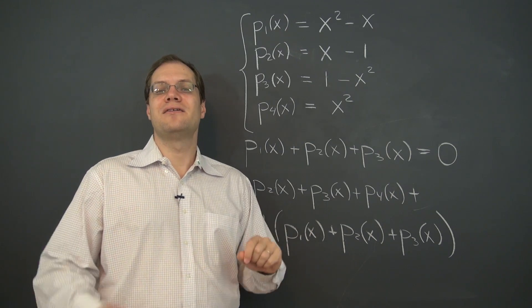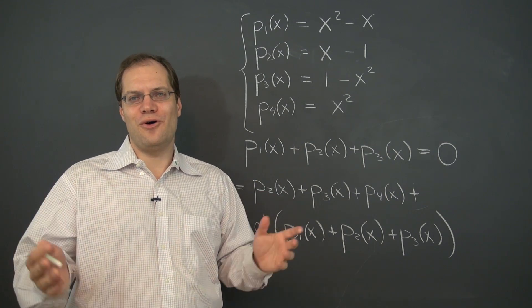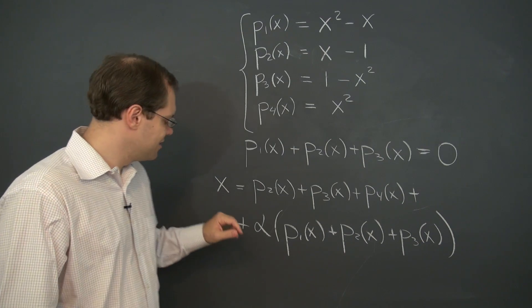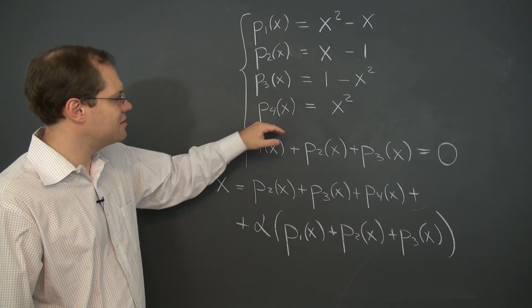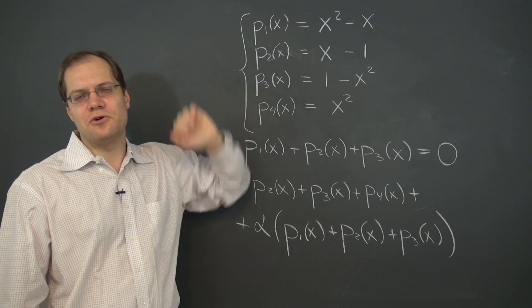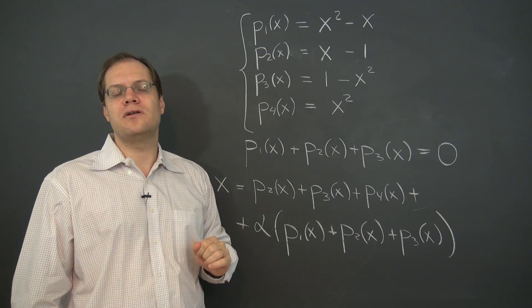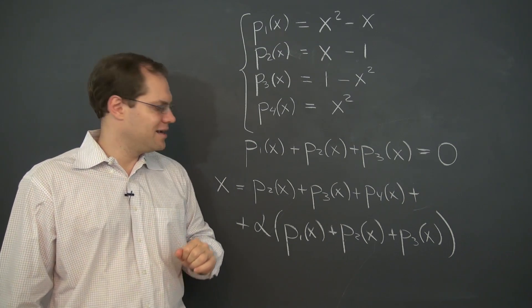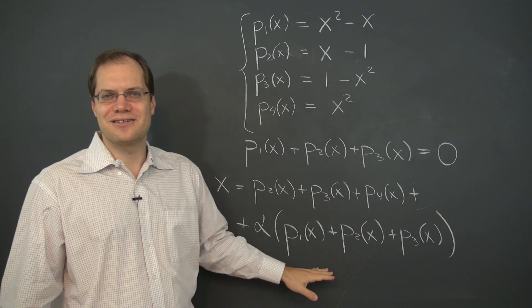And that expression would capture all possible linear combinations that express this vector as linear combinations of these four vectors. And that's the whole point of linear dependence and the geometric perspective.